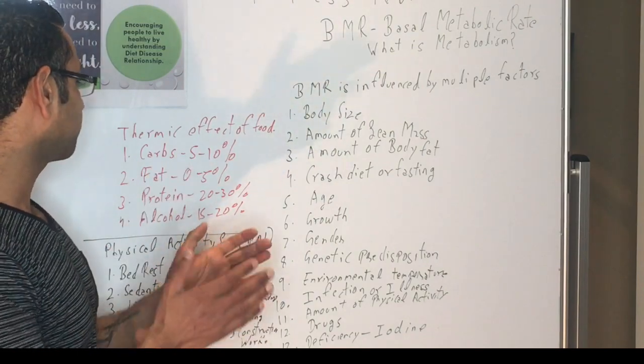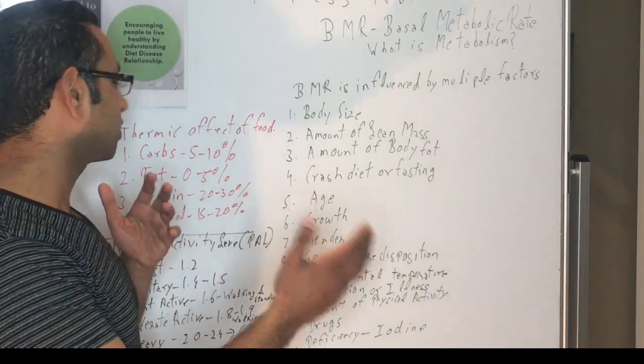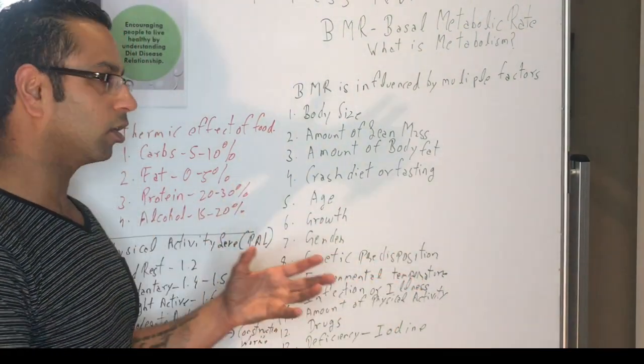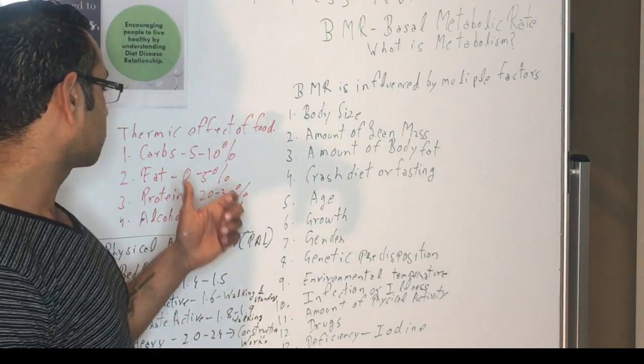So carbs is around 5 to 10 percent. So for example, if you have consumed 100 calories from carbs, chances are you only gonna—the net is only gonna be 90 to 95. With fat, it's 0 to 5 percent, but generally fat is around 3 percent.